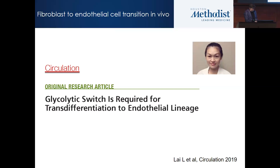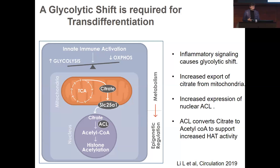Dr. Techmeyer helped us with the role of a glycolytic switch in this process. Li Lai showed very nicely that a glycolytic switch occurs with inflammatory signaling and is absolutely critical for the epigenetic plasticity. The glycolytic switch increases citrate supply to the nucleus, where it is converted into acetyl-CoA for histone acetylation, opening the chromatin. More recently, GlcNAcylation — another metabolite-driven epigenetic modification — also opens the chromatin and increases DNA accessibility.